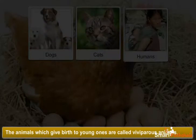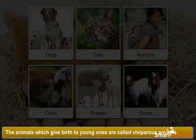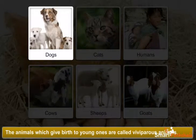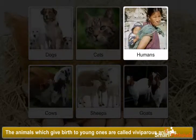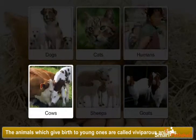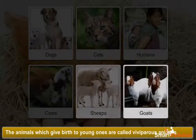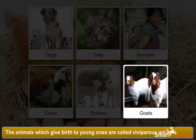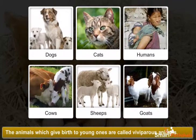The animals which give birth to young ones are called viviparous animals. Dogs, cats, humans, cows, sheep, and goats are some of the viviparous animals.